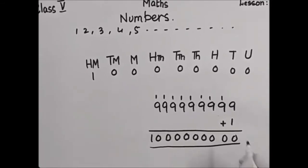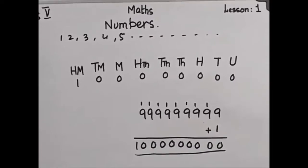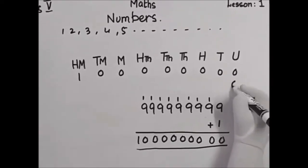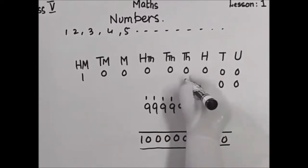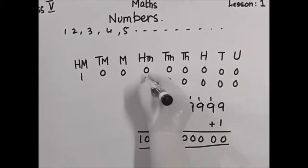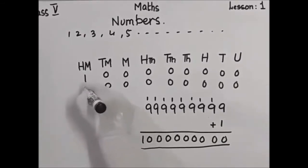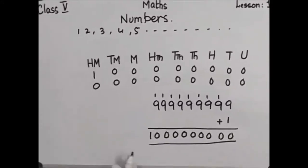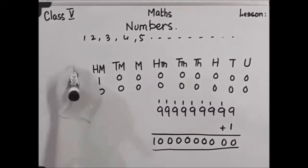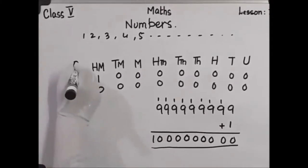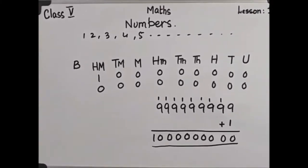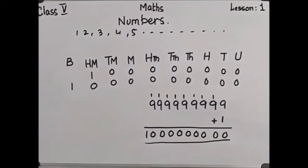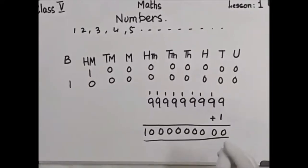In the place value chart, we put all numbers as zero, zero, zero, zero, zero, zero, zero. But where do we put the one? After hundred millions in the place value chart, the value is billion. We write one over there. Ten-digit numbers are called billions.